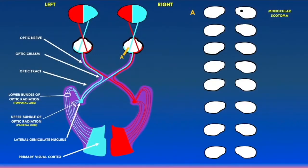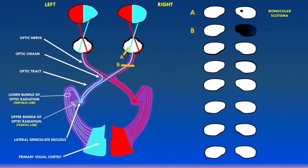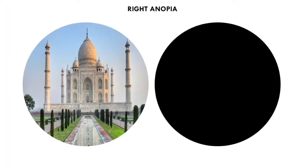Now let's talk about a lesion at point B, which is a lesion of the right optic nerve. If the optic nerve is damaged, the fibers coming from the retina can also be damaged, meaning no visual signals from the right eye will be able to reach the brain. The visual field defect for lesion B shows a complete loss of vision in the right eye, known as right anopia.